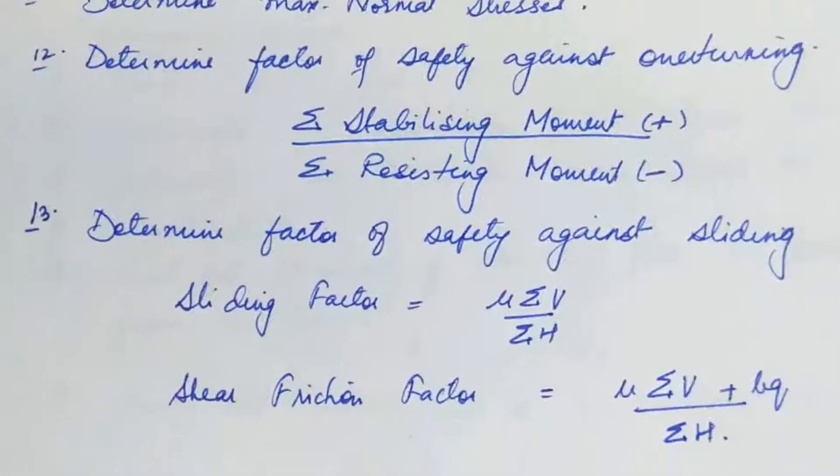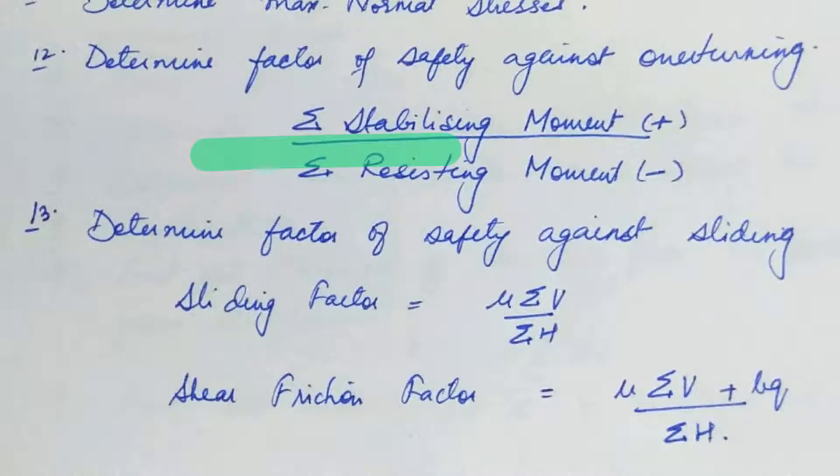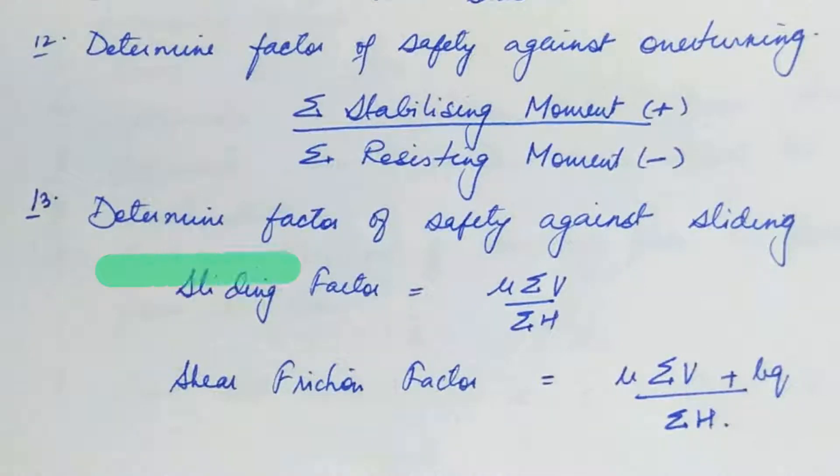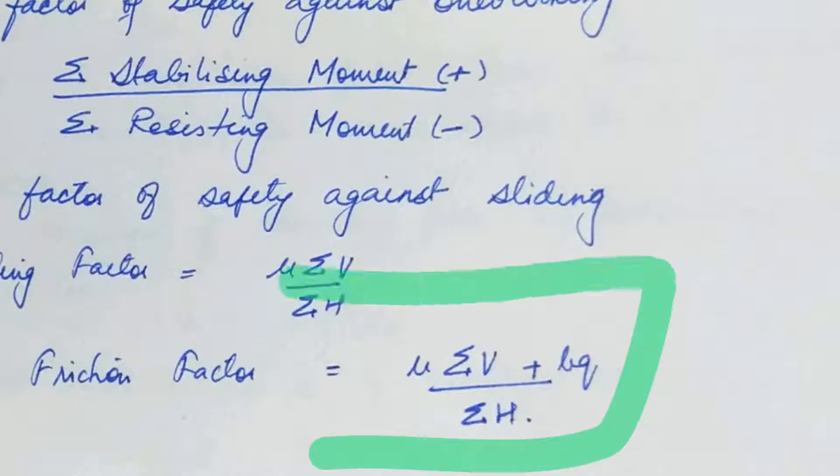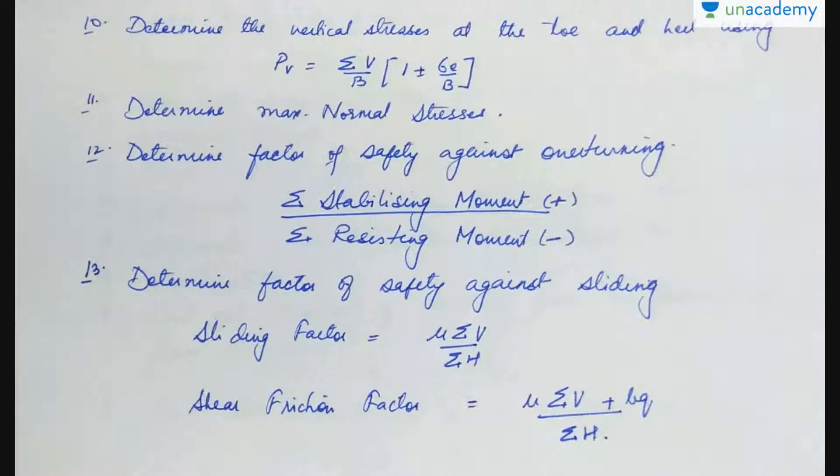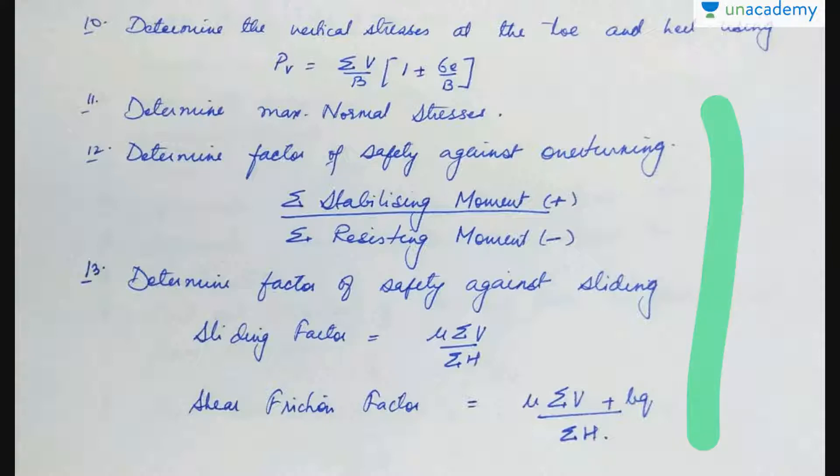Next step, find the factor of safety against overturning, which can be found out by sigma stabilizing moment upon sigma resisting moment. Add all the positive moments together and add all the negative moments together here. Now, determine the factor of safety against sliding. Sliding factor is actually equal to mu sigma v upon sigma h for low high dams. And for high dams, we have to find out the shear friction factor, which is actually equal to mu sigma v plus b q upon sigma h. Now, if all these are found safe, then your structure is safe.